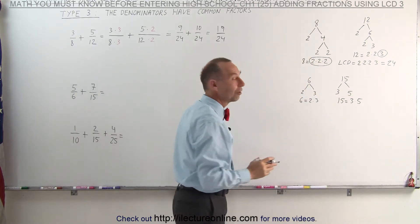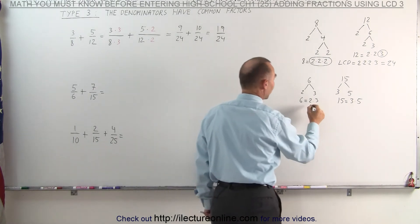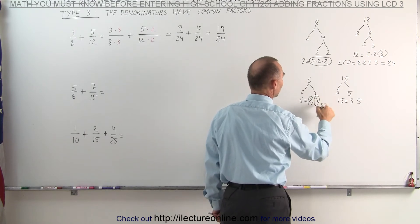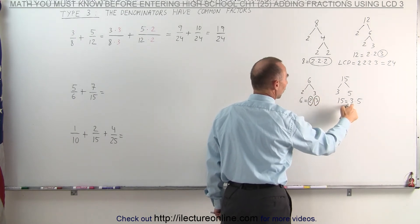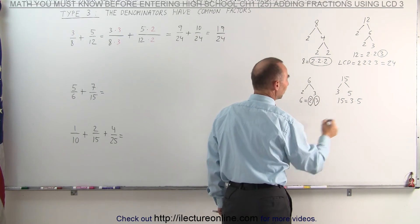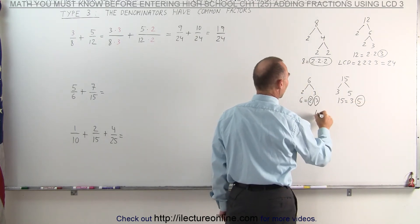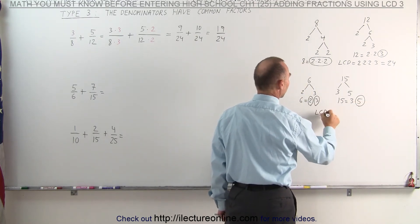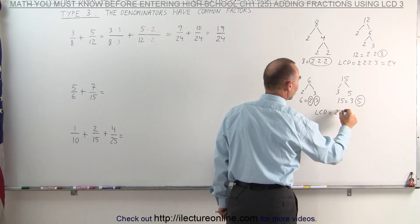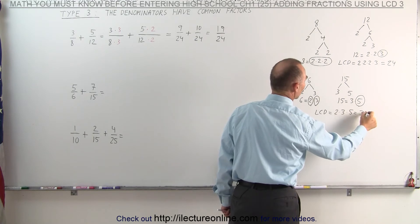Now let's circle the prime factors which occur the most. Here we have the number 2, and here we have the number 3 — it also occurs once in 15, but we only have to circle it once. And here we have the number 5, which means the lowest common denominator is simply the product of all the factors we circled: 2 times 3 times 5, which is 30.